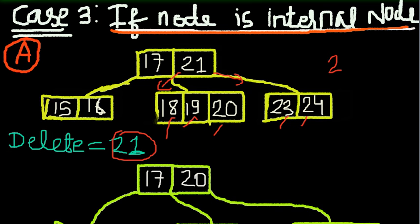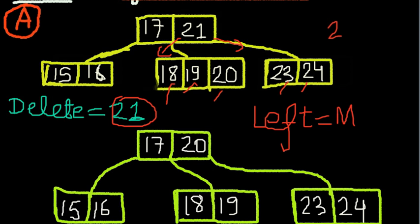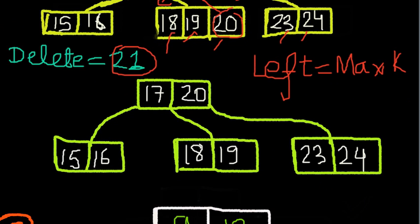Whenever you get help from the left side, always take the maximum key it can give you. The maximum key is 20 — shift this in place of 21. Done. We shifted 20 here and we are done. Does this cause any violation? No, it doesn't.